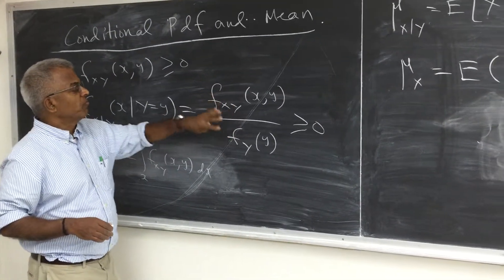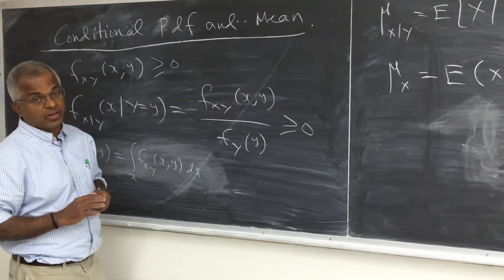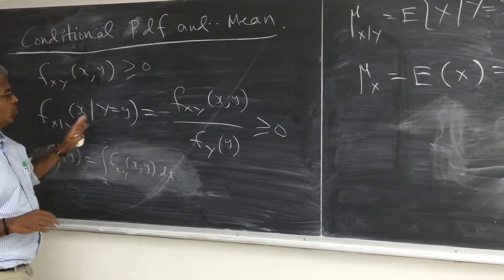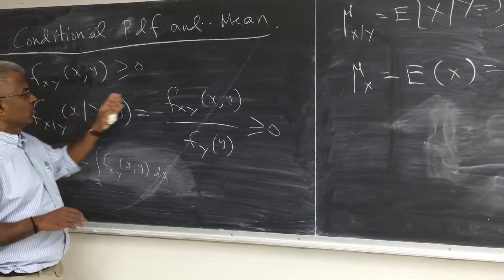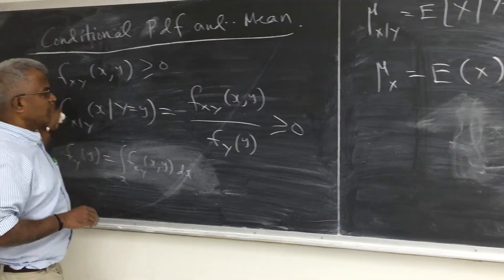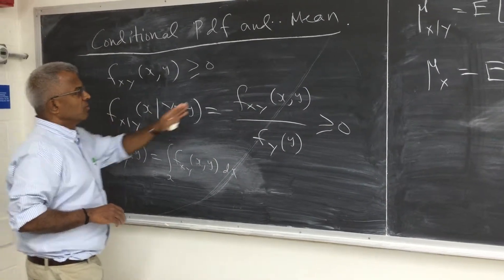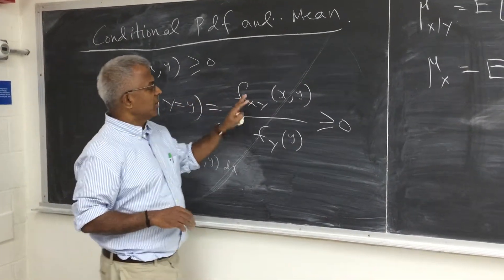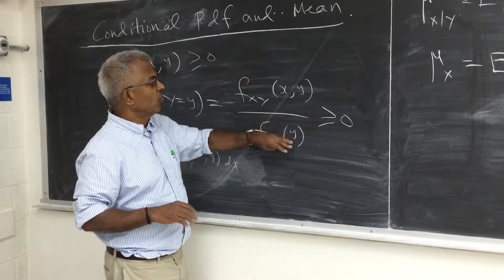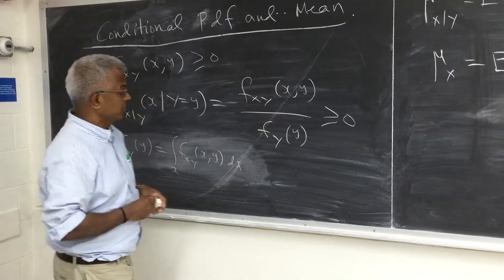This ratio has all the properties of a density function, including that the area under it is 1. You can quickly see that since this is a function of X, if you integrate out X, you get F(Y,Y) over F(Y,Y), which is 1.